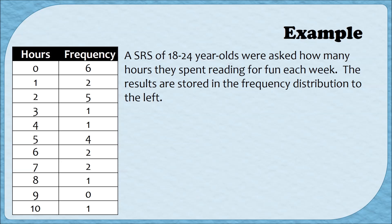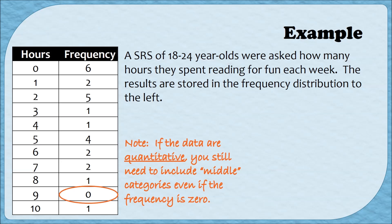For example, the frequency for those who read nine hours a week is zero — nobody reported that. If this had been qualitative data, I wouldn't have included nine hours because it wouldn't have appeared in my list. However, for quantitative data you must include all middle values. Because responses ranged from zero hours all the way up to ten hours, we have to include every single option in between, even if the frequency is zero. This is really the only big difference between quantitative and qualitative data when creating a frequency distribution.